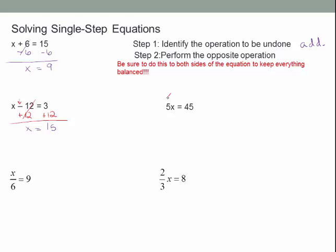For 5x equals 45: the operation is multiplication, so the opposite is division. Divide both sides by 5 — those cancel — leaving x, and 45 divided by 5 is 9. For x over 6 equals 9: this is division, so the opposite is multiplication. Multiply both sides by 6 — those cancel — leaving x, and 9 times 6 is 54.